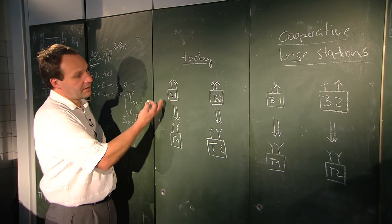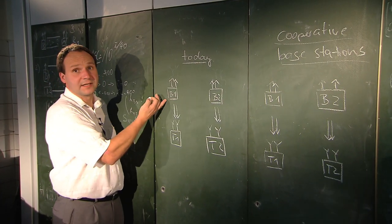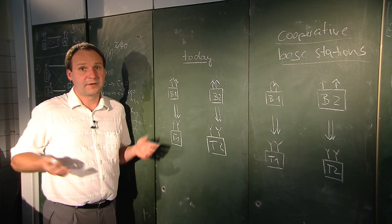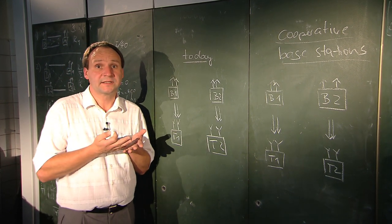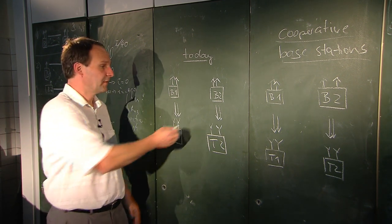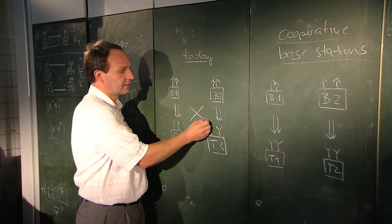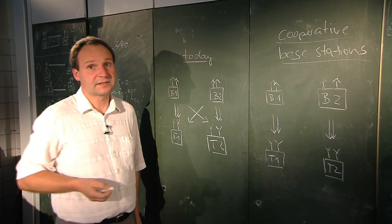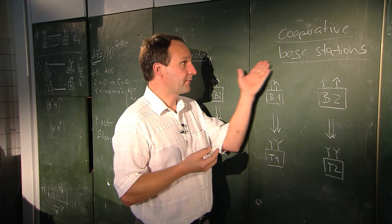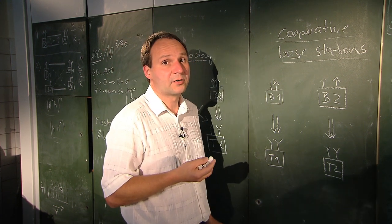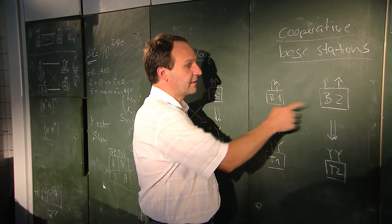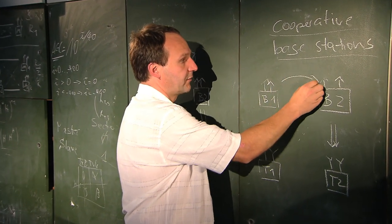Here we have two base stations, and each of these base stations is serving one terminal. If we are in the overlap region of the signals between the two base stations, then there is strong interference, and this interference degrades the performance dramatically. If we have our new technique — cooperative base stations — then these base stations exchange information.